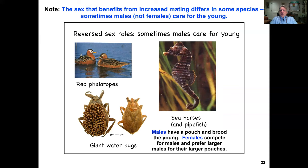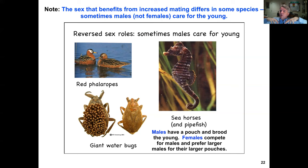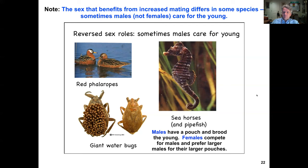The sex that benefits more from increased mating differs in some species. Sometimes males — not females — care for the young, and with these reversed sex roles, it's often the females that are more brightly colored and even have weaponry, as seen in some water birds. In seahorses and pipe fish, males have a pouch and brood the young, and females compete for males, preferring larger males because they have larger pouches. When Bateman's principle is reversed, the aspects of dimorphism are often reversed as well.